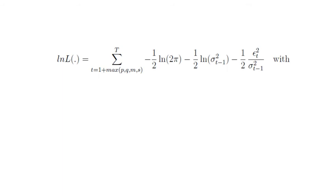Otherwise, it has the same known three components: minus half log 2 pi, minus half log sigma square t minus 1, and then minus half the prediction error to the power of 2 at time t divided by the conditional variance.